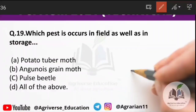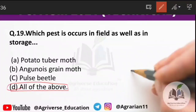Question 19: which pest occurs in the field as well as in storage? Options are potato tuber moth, Angoumois grain moth, and pulse beetle. The right answer is all of the above — potato tuber moth, Angoumois grain moth, and pulse beetle all infest crops in the field as well as in storage.